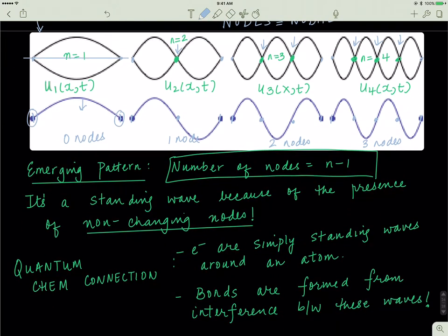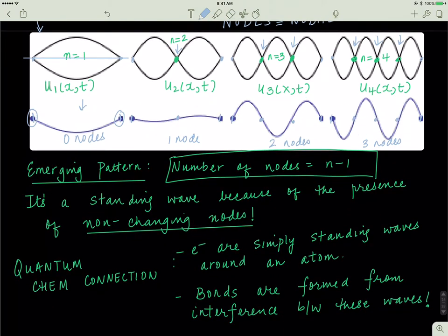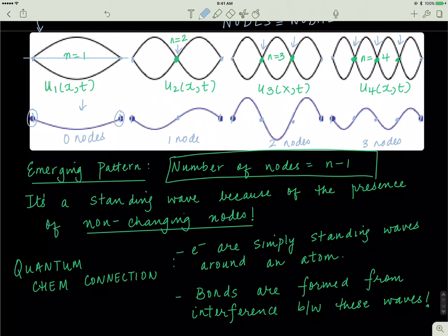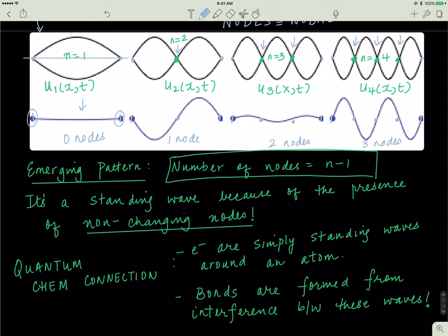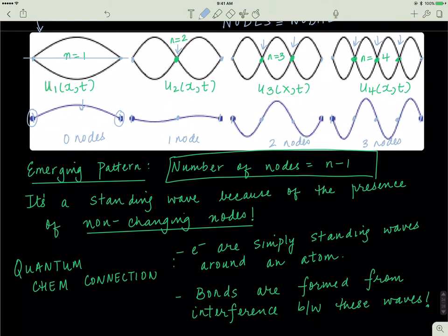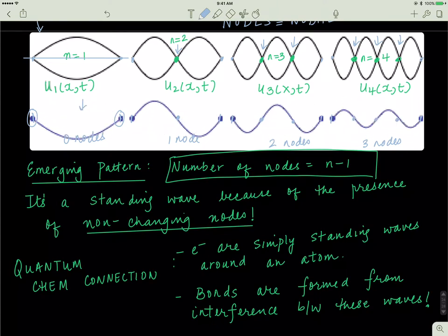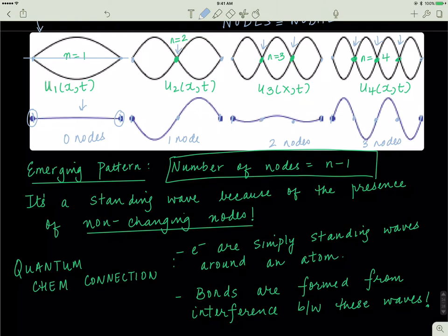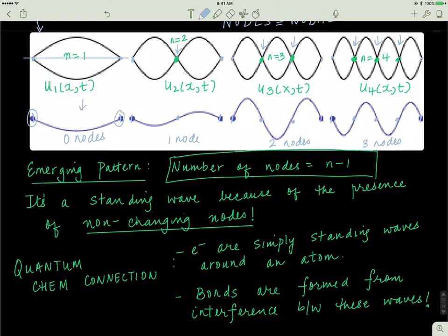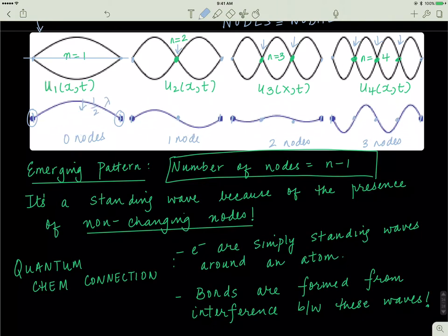So what's the quantum chemistry connection? Well, the idea here is that electrons are simply standing waves around an atom. If you look at these waves, you notice that basically certain amount of wavelengths fit into each of these waves. Here, I have half of a wavelength. Because one wave looks like this, right? So I have one full wavelength here, and I have half a wavelength here.